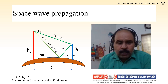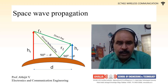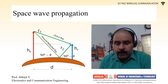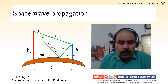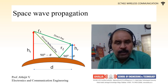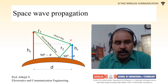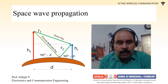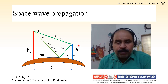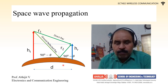I have included the first slide from the previous session. We have R1, the distance travelled by the directly transmitted ray, and R2, the ray reflected from the ground. Ht is the height of the transmitter, Hr is the height of the receiver antenna, and D is the distance between them.